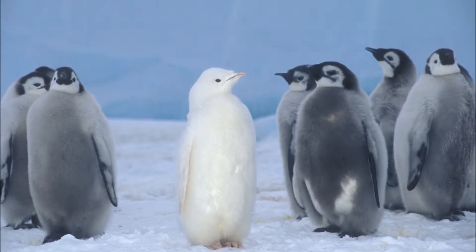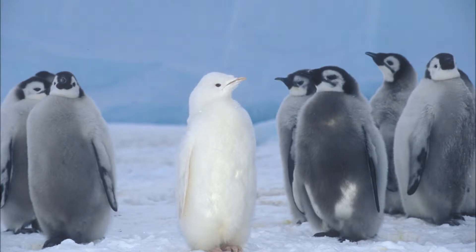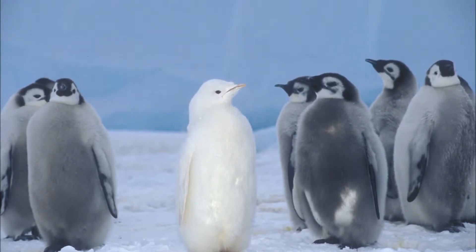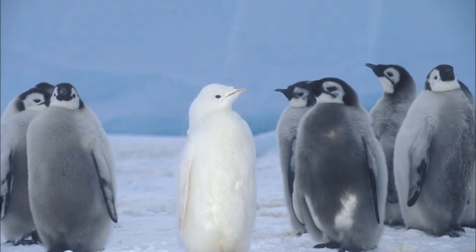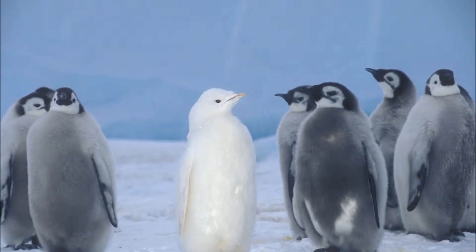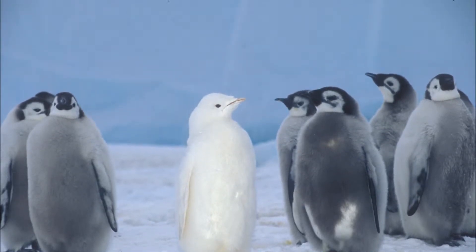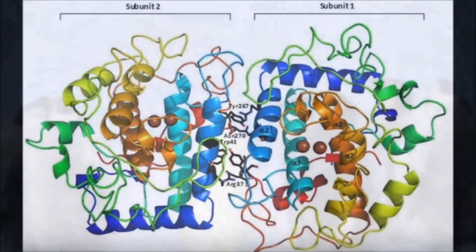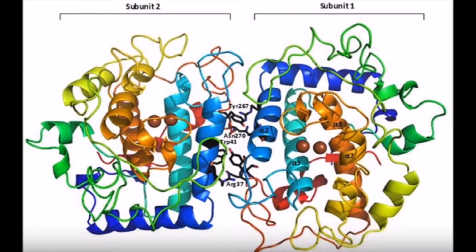However, a mutation in the tyrosinase gene can lead to genetic diseases, such as albinism, which results in the body's inability to produce melanin, resulting in an absence of color in the hair, skin, and eye. Let's discuss in more detail how tyrosinase works.